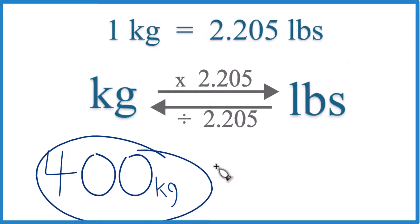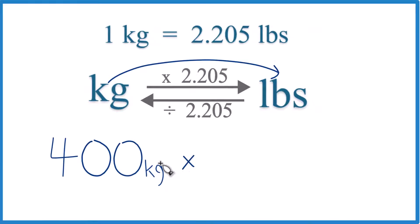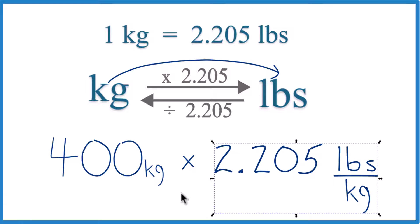Since we have 400 kilograms here, we're going to go kilograms to pounds. We're going to multiply by that 2.205 number, that conversion factor there. And note that it's 2.205 pounds per kilogram. That comes from our conversion factor here.